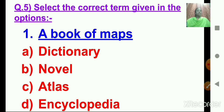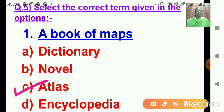Select the correct term given in the options. Number 1: A book of maps. Now children, you have to understand what is given here. A book of maps — what is it called? Let's see the options. A: Dictionary. B: Novel. C: Atlas. D: Encyclopedia. A book of maps is called an Atlas. So let's click on C, that is Atlas.